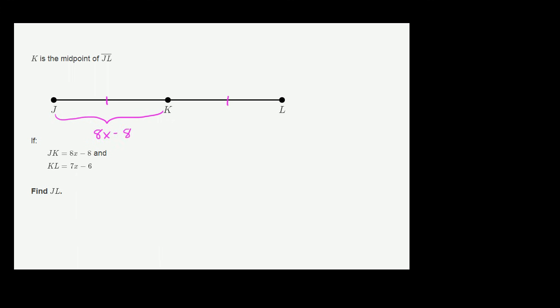And then they tell us that segment KL is equal to 7x minus 6, that its length is equal to 7x minus 6. So this length right over here is 7x minus 6.